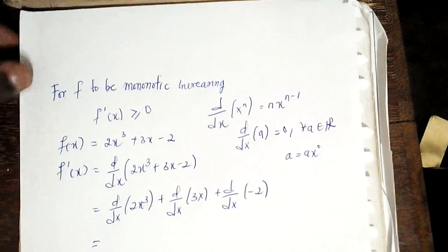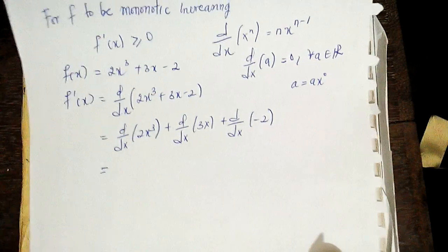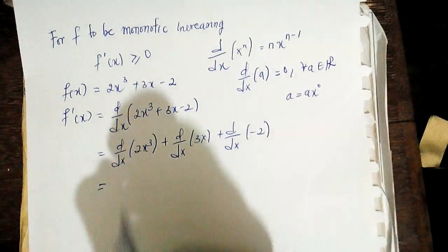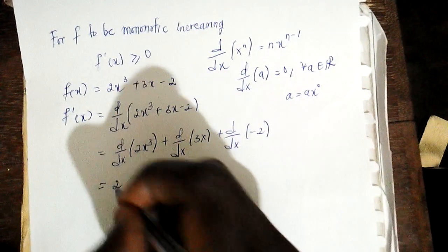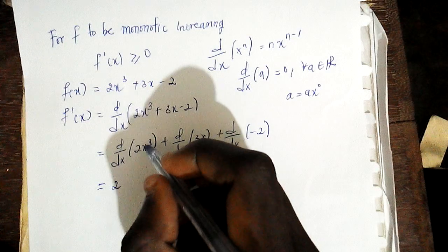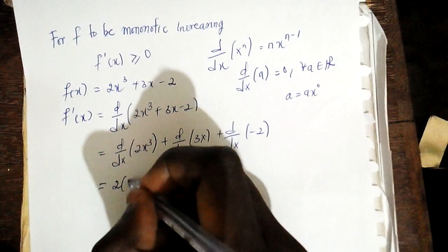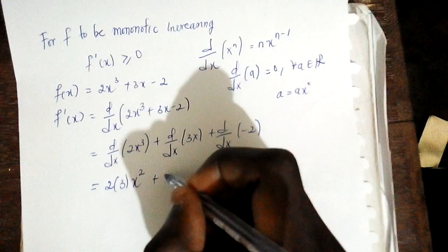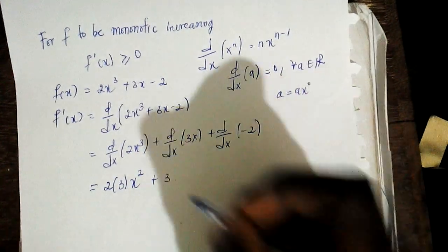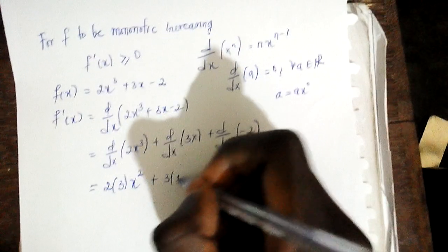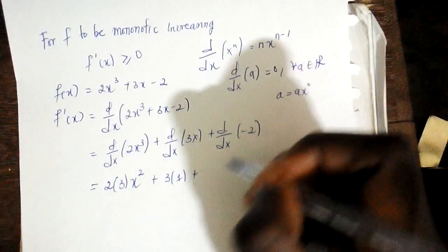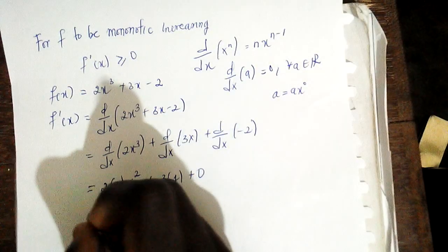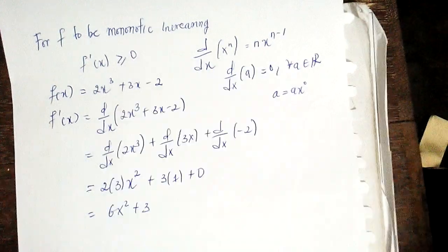For the first derivative, you have 2 outside as a constant. You drop down the 3, multiply 3 by 2, then you have x raised to the power 3-1 which is 2. Plus you keep 3 outside as a constant, differentiate x to get 1. The derivative of the constant is 0. So this gives you f'(x) = 6x² + 3.